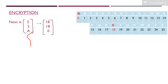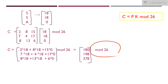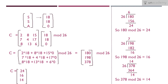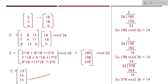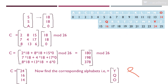The next trigraph is SSA, with integer values S=18, S=18, A=0, giving vector [18, 18, 0]. Applying the key matrix and performing matrix multiplication, we get 180, 198, and 378. Taking mod 26: 180 mod 26 = 24, 198 mod 26 = 16, 378 mod 26 = 14. Converting to alphabet: 24=Y, 16=Q, 14=O. So SSA is encrypted to YQO.